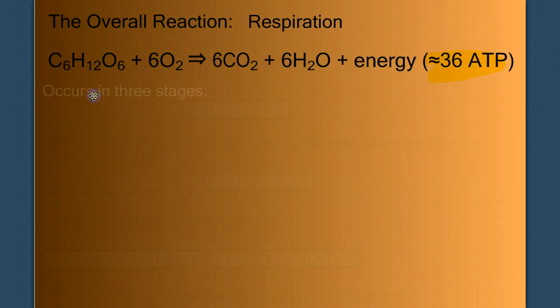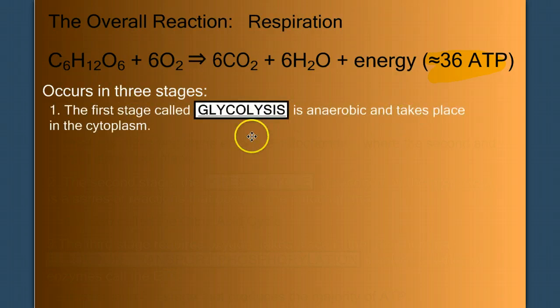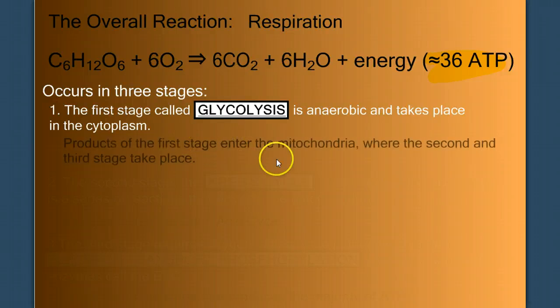Cellular respiration is going to occur in three stages. The first stage is called glycolysis. It's an anaerobic stage that takes place in the cytoplasm. The products of glycolysis will enter the mitochondria where the second and third stages of respiration occur.